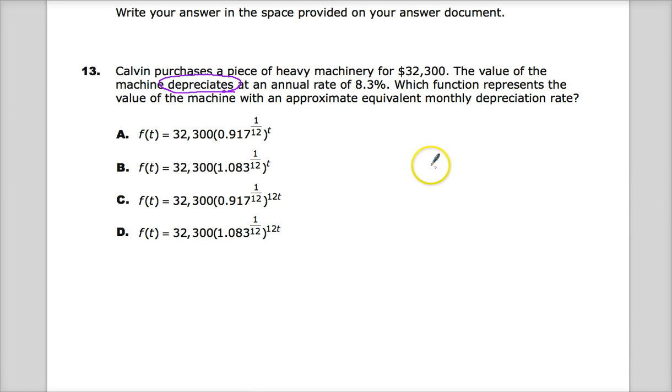So, when I multiply 32,300 by 8.3%, which is 0.083, move the decimal points over a couple and you get there, that doesn't give me a value that is meaningful on its own. So, that would be $2,680.90.